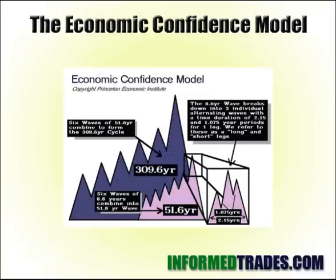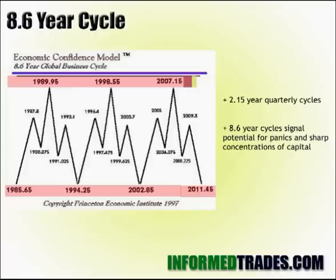You can break those cycles into smaller cycles, and in fact the 51.6-year cycle is just six of the 8.6-year cycles. Then six of the 51.6-year cycles gives us 309.6 years. The longer cycles occur less frequently, but when they do occur, it's particularly intense. The U.S. Great Depression in 1929 occurred at a 51.6-year interval — that's an example.